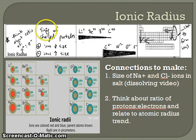Ionic radius is used to measure the size of charged particles. We can be talking about cations, which are positively charged ions which will decrease in size, or we can be talking about anions, negatively charged particles, which will see that their size increases. Connections to make here: in the video about the dissolving of salt, there is a comparison of the size of sodium positively charged ions and chloride negatively charged ions. It's also important to compare the ratio of protons and electrons to determine what happens to the size of different particles as they form ions.